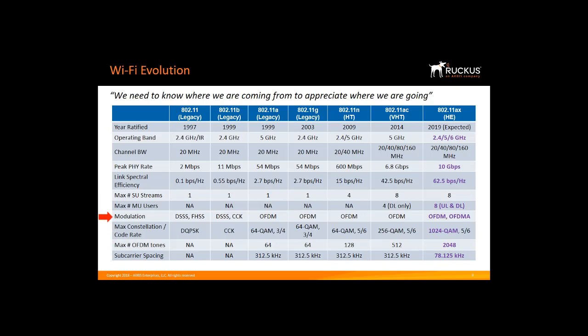11ax introduced a new modulation scheme called Orthogonal Frequency Division Multiple Access, or OFDMA. This is new to Wi-Fi, but has been in use in other standards, especially LTE, where it works very well. The concepts that have been proven in LTE are now being integrated into Wi-Fi. 11ax also added a modulation scheme of 1024 QAM, which allows us to do higher data rates. The maximum number of OFDM tones is increased from 64 in 11n up to 2048 on a 160 MHz channel in 11ax, and the sub-carrier spacing has been reduced by four times, from 312.5 kHz to 78.125 kHz.